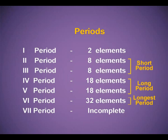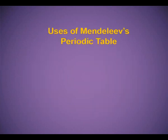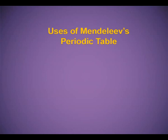Period 7 has 32 elements but is still incomplete. The uses of Mendeleev's periodic table: each group has elements with similar properties, and it facilitated the study of all the elements.